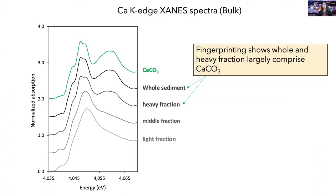We've attempted to answer this question using calcium K-edge XANES spectroscopy, which probes the excitation of a calcium 1s electron into molecular orbitals. What I'm showing here is the bulk spectra, measured using a large beam over a large representative area of the sample. I've done this measurement for the light, middle, and heavy density fractions, as well as the whole sediment. By comparison to the spectrum for calcite or calcium carbonate, you can see right away that the dominant form of calcium in the whole sediment is calcite, dominating the features in the XANES spectrum, and that calcite is separated primarily into the heavy fraction during density fractionation.